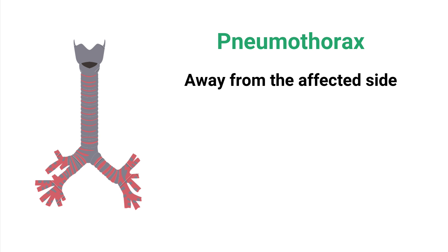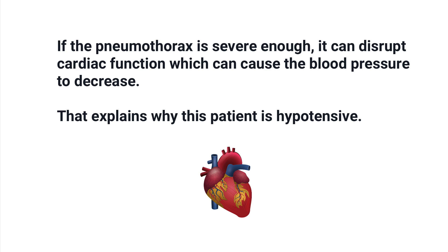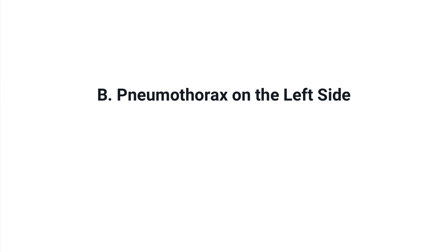Remember, for a pneumothorax the trachea will shift away from the affected side. You can rule out left-sided atelectasis because in that case the trachea would shift toward that side. Also, if the pneumothorax is severe enough it can disrupt cardiac function, which can cause blood pressure to decrease — and that explains why this patient is hypotensive. So by using what we know about a pneumothorax as well as the process of elimination, the correct answer has to be B, left-sided pneumothorax.